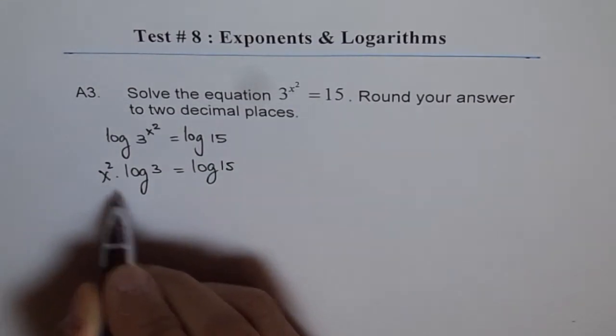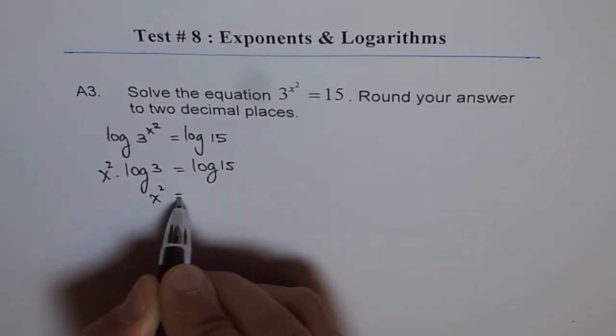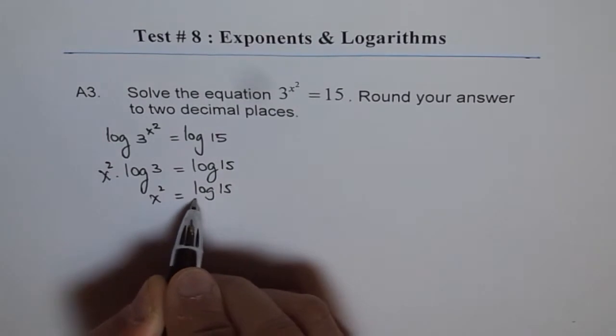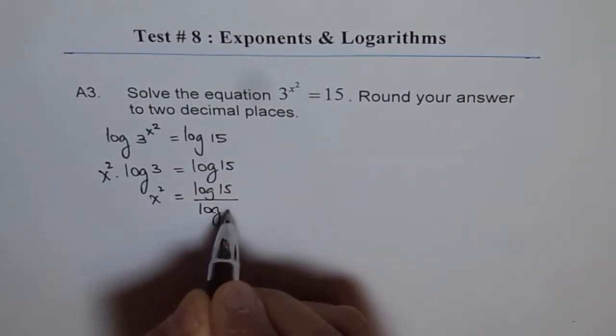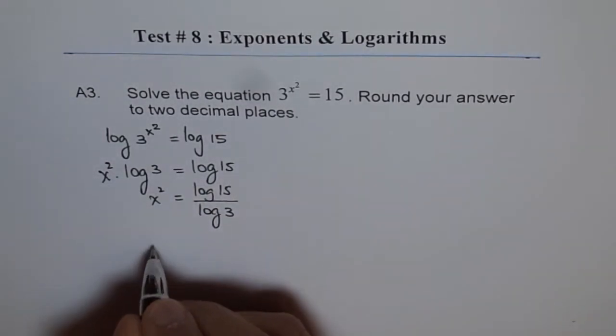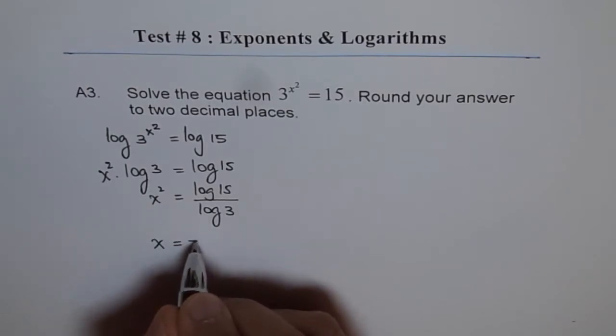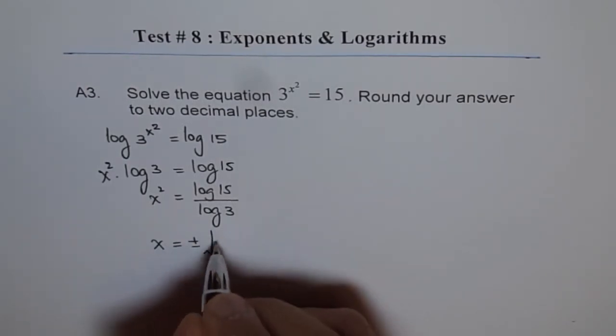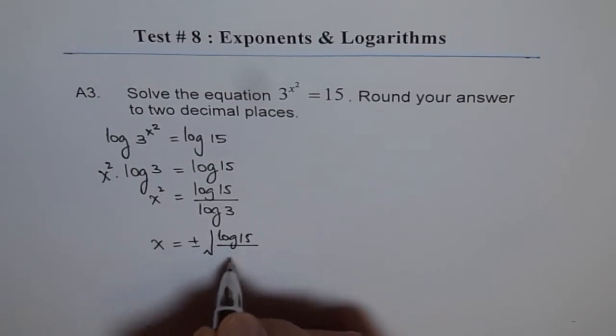Now we can write x squared equals to log of 15 divided by log of 3. x will be equal to plus and minus square root of log of 15 divided by log of 3.